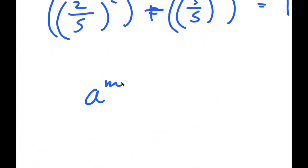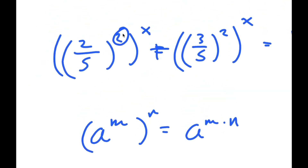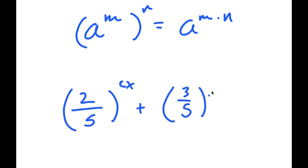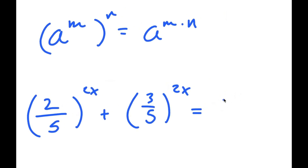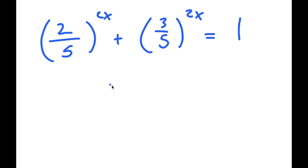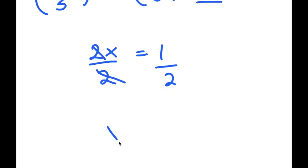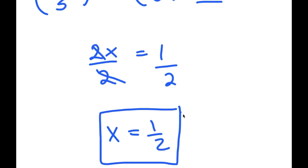From here, if I have something in the form a to the power of m to the power of n, this is equal to a to the power of m times n. So the 2 and x multiply, giving me 2 over 5 to the power of 2x plus 3 over 5 to the power of 2x is equal to 1. This means that 2x is equal to 1, so dividing both sides by 2, I get x is equal to one half. So this is my solution.